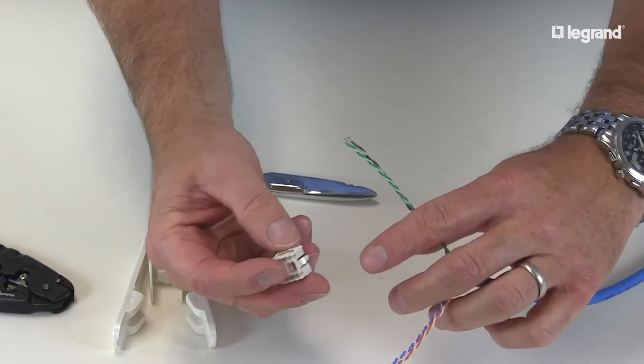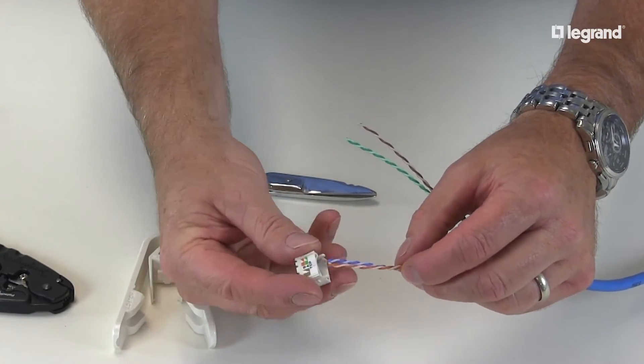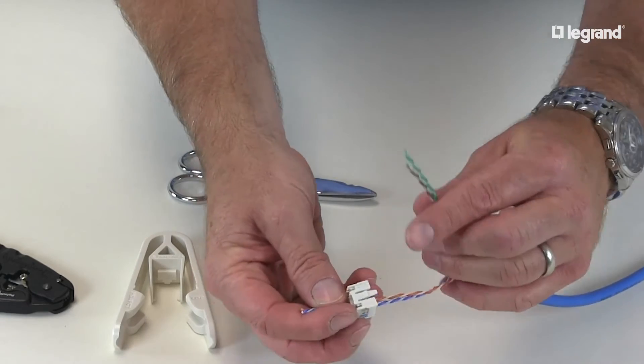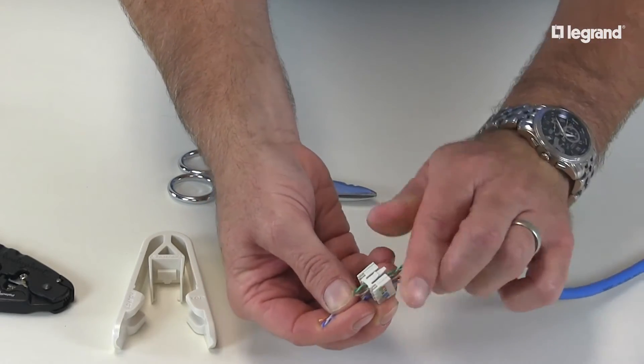Next, lace the cable wires through the appropriate channels in the lacing cap. Make sure you align the color of the cable wires to the relevant color coding on the lacing cap.